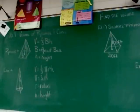Not this height, this height. Again, one-third times B times H, where B is the area of the base and H is the height.